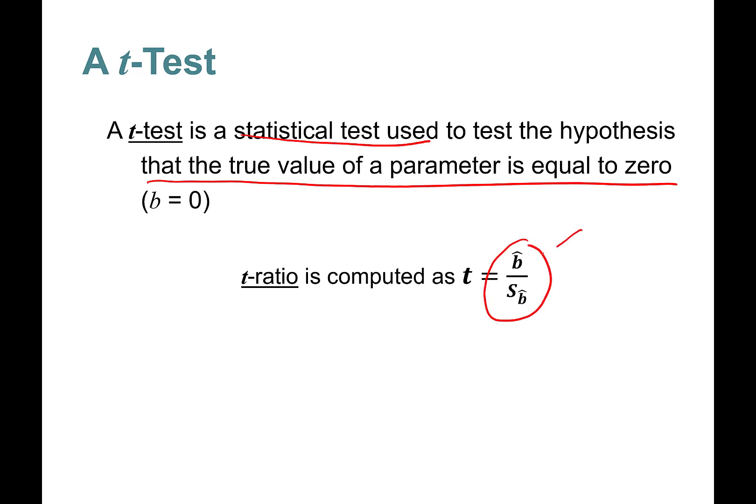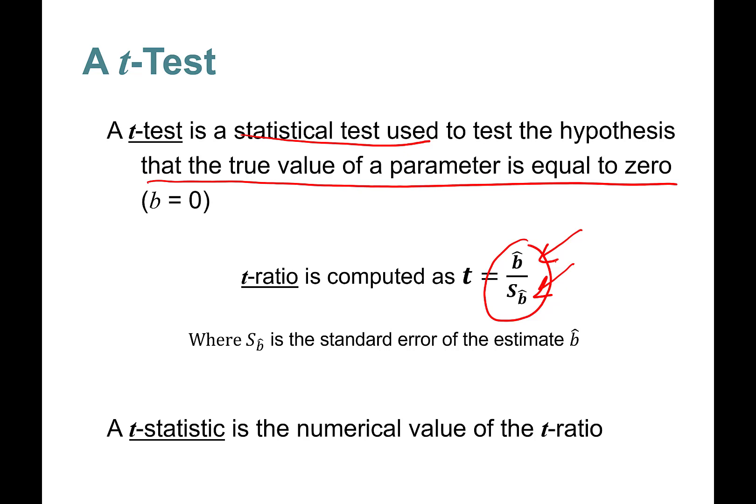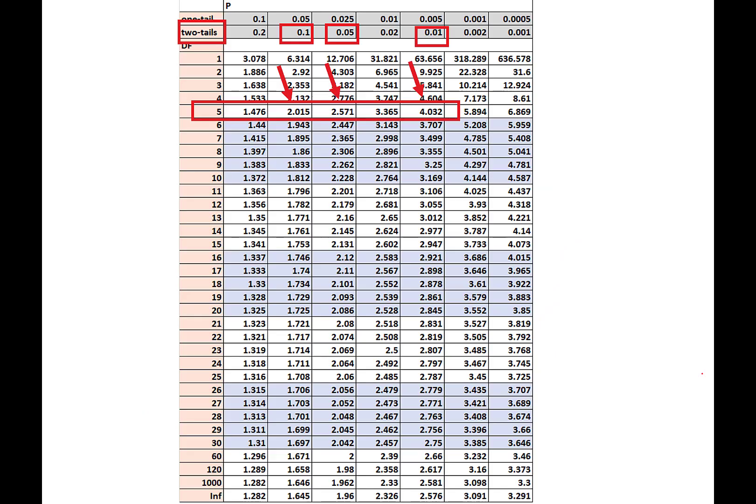We learned about t-ratios, right? The t-ratio is the coefficient estimate divided by the standard error of the coefficient estimate. Then we will grab this t-statistic, t-ratio, and take its absolute value. The t-ratio, or t-statistic, is a numerical value.